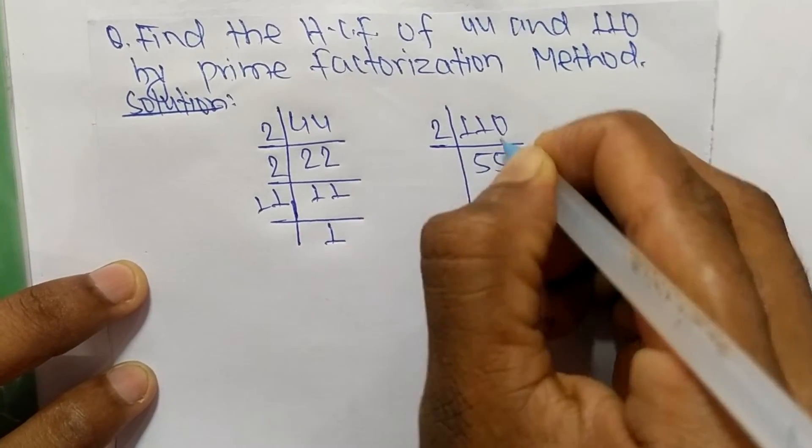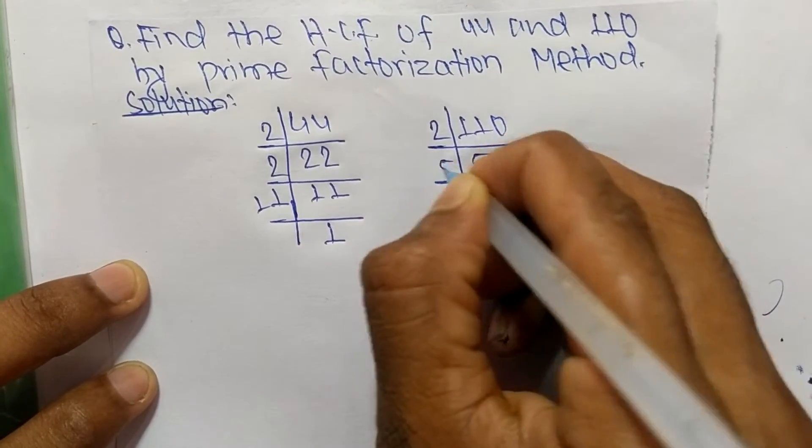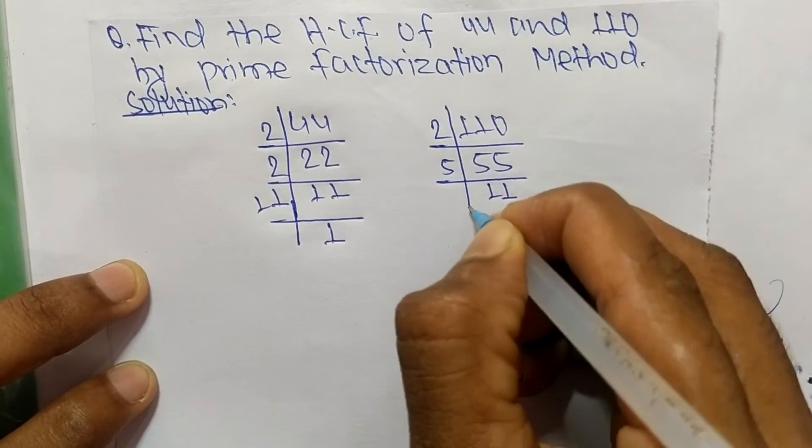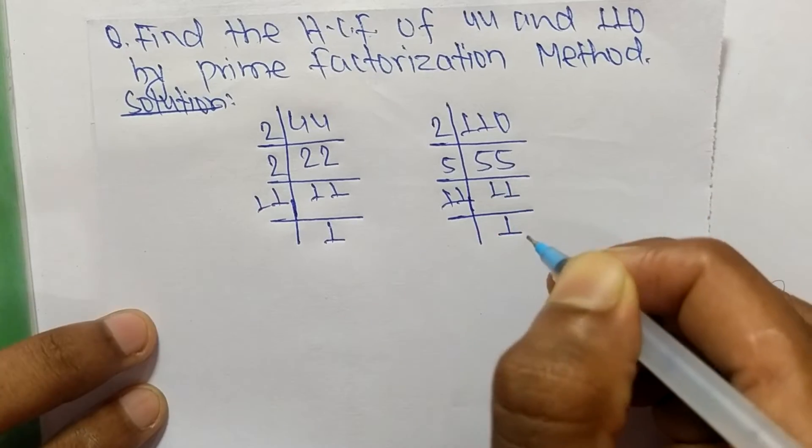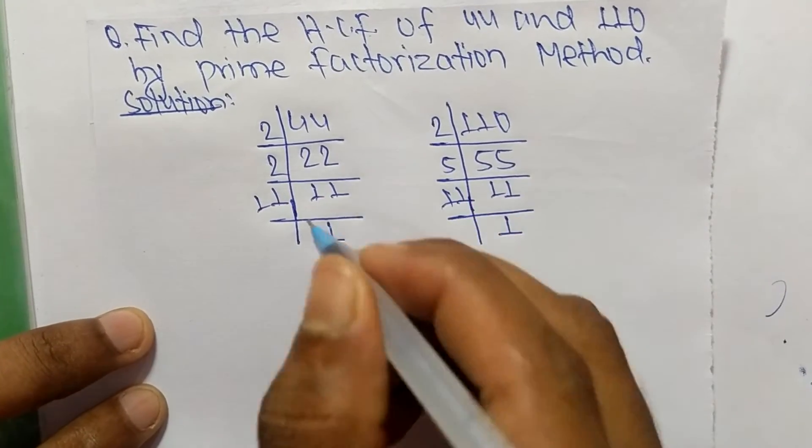2 times 55 means 110, 5 times 11 means 55, and 11 times 1 means 11. So from these prime